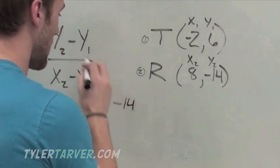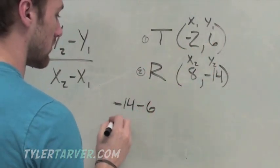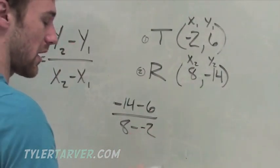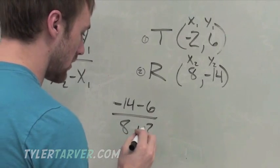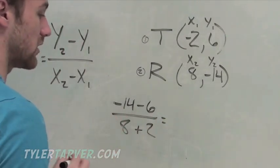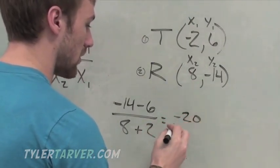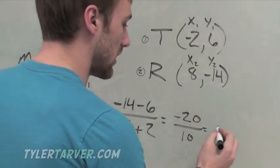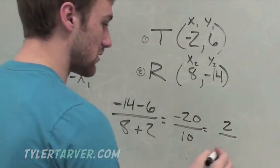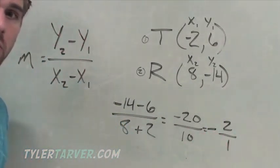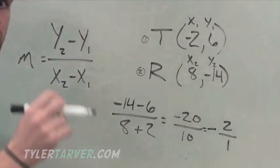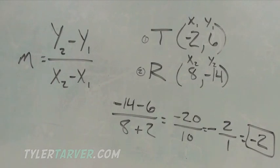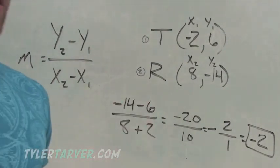Let's see. Y2 is negative 14 minus 6, which is our y1, over x2 is our 8 minus our negative 2. When you minus a negative, it's a positive. Negative 14 minus 6 is negative 20 over 8 plus 2, which is 10. What goes into both of those? 10. 10 goes into 20 two times. 10 goes into 10 once. Don't forget about our negative. That would be our slope. But what is anything divided by 1? It's itself. So it's negative 2. So our slope is negative 2. Good job. Hopefully from this you can go on and fulfill all your dreams.